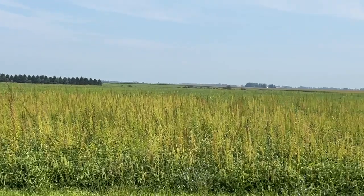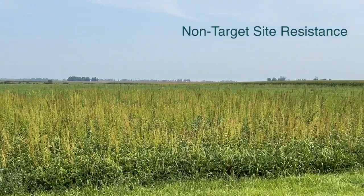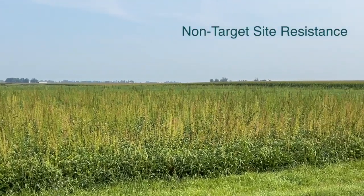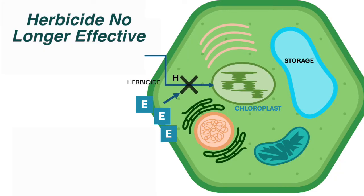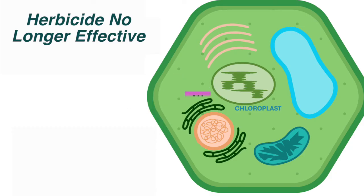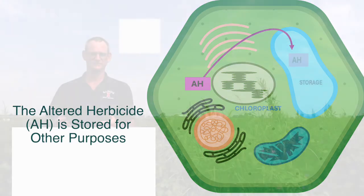The other type of resistance is a broad category which we call non-target site resistance. What happens with non-target site resistance is the plant prevents the herbicide from reaching its target site, and the most common way plants do that is by evolving the ability to more rapidly detoxify the herbicide.